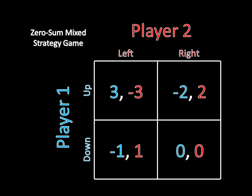So for example, what we need to do is find a mixed strategy for player one — so sometimes he'll play up and the rest of the time he'll play down — that leaves player two indifferent between selecting left and right. If player two gets the same payoff on average for selecting left as she does for selecting right, then it doesn't matter which strategy she chooses. So she can choose a mixed strategy, a randomization between left and right. And if that randomization leaves player one indifferent between choosing up and down, then neither player is going to have incentive to change his or her strategy, and we end up in a mixed strategy Nash equilibrium.